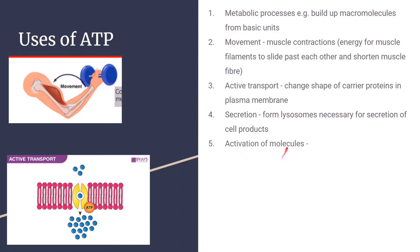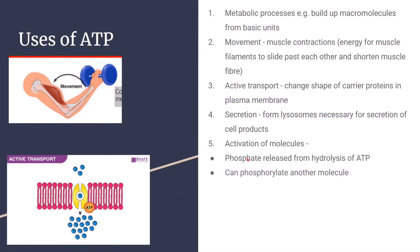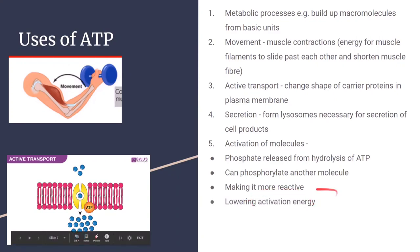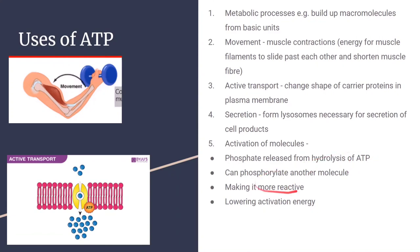ATP is also used in the activation of molecules. When ATP is hydrolyzed into ADP and a phosphate group, that phosphate can phosphorylate another molecule. This makes the molecule more reactive, lowering its activation energy. So the phosphate group released from ATP is attached to another molecule, making it more reactive and lowering the activation energy of that enzyme-catalyzed reaction.